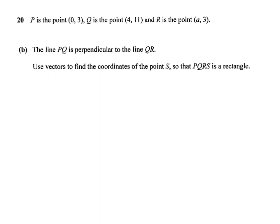So P is the point (0,3), Q is the point (4,11), and R is the point (a,3). But we already found a to be the value of 20, so R is now (20,3). They tell us that PQ is perpendicular to the line QR. Find the coordinates of point S so that PQRS is a rectangle, and we need to use vectors.